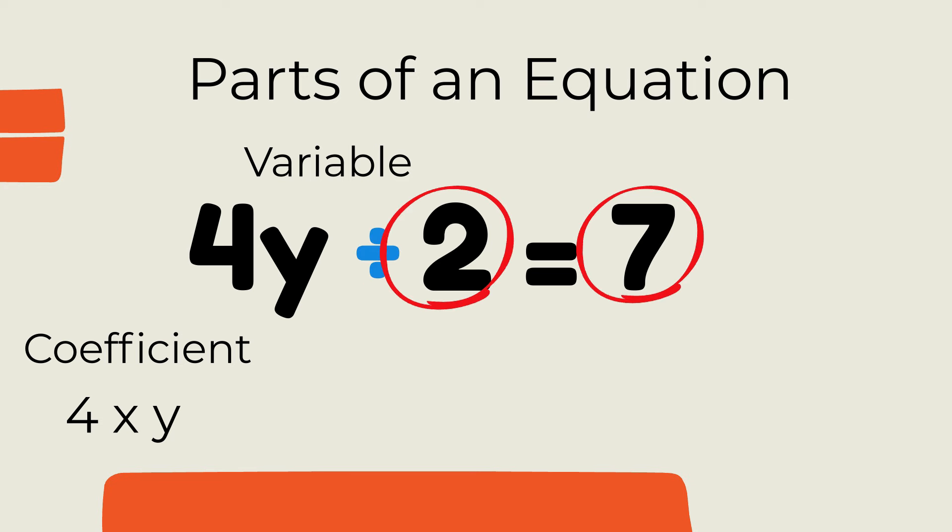The 2 and the 7 are constants, which are fixed values. Most of the time they are numbers, but it can be a letter that stands for a fixed number.